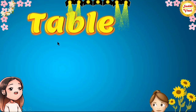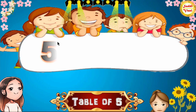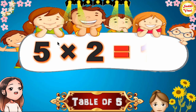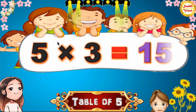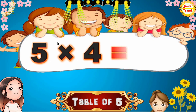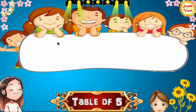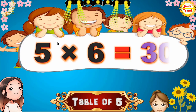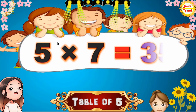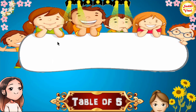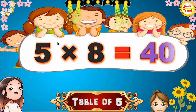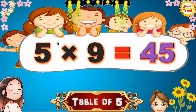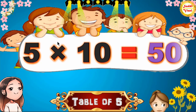Hello children, we will learn table of 5. 5×1=5, 5×2=10, 5×3=15, 5×4=20, 5×5=25, 5×6=30, 5×7=35, 5×8=40, 5×9=45, 5×10=50.